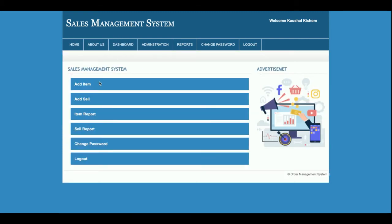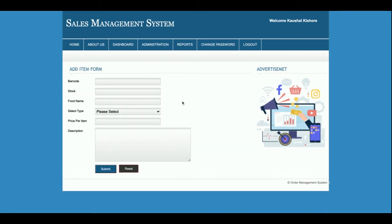The same menu is available on the dashboard as well. You can navigate to any page using the menu links. Once you click on Add Item, you need to enter the barcode, stock, food name, item type, price, and description.